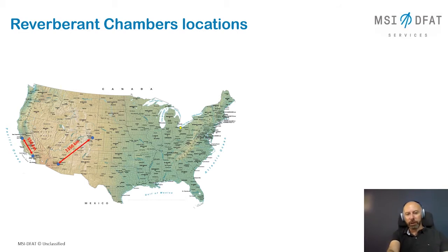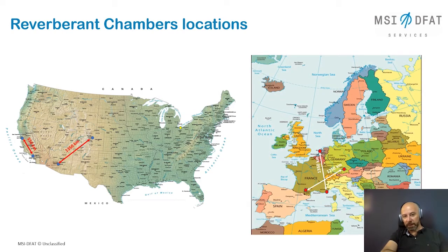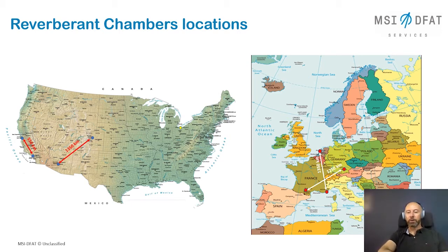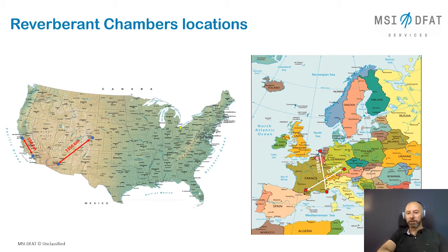In Europe, there are four large chambers: one in Toulouse, now Airbus; one in Cannes, which is Thales Alenia; and IABG in Munich. Two are public test houses, two are owned by Airbus and Thales. Wherever you are in Europe, you can find an acoustic chamber that's not too far. That's why in the US there was a much stronger push to find an alternative solution.